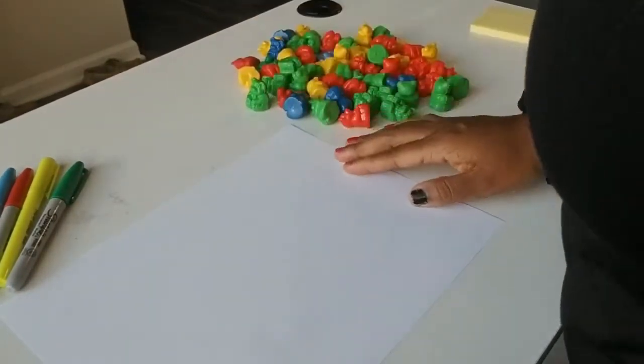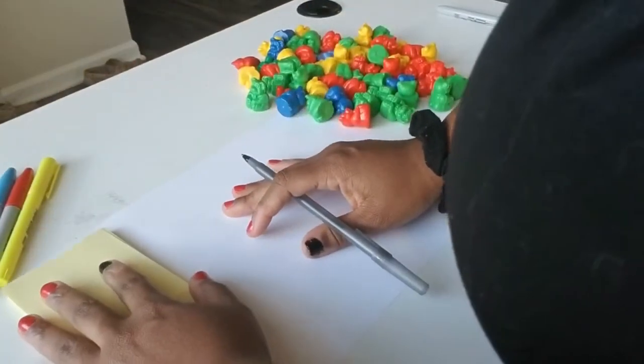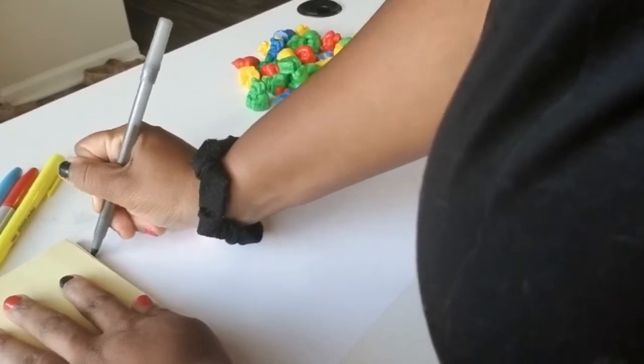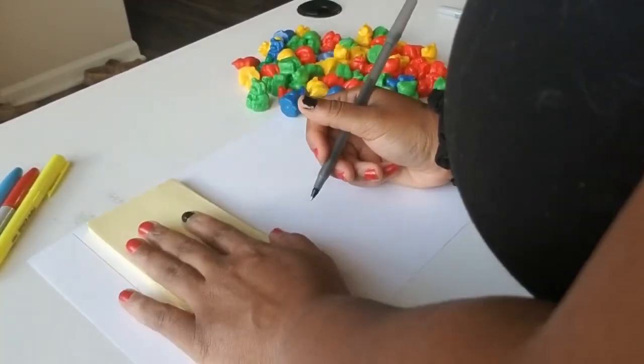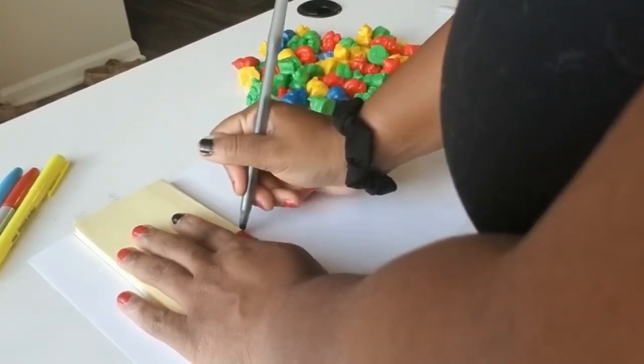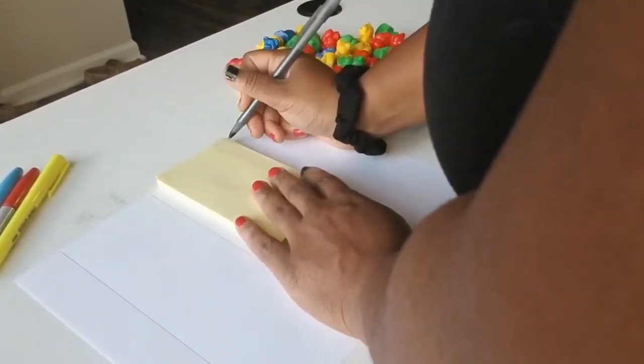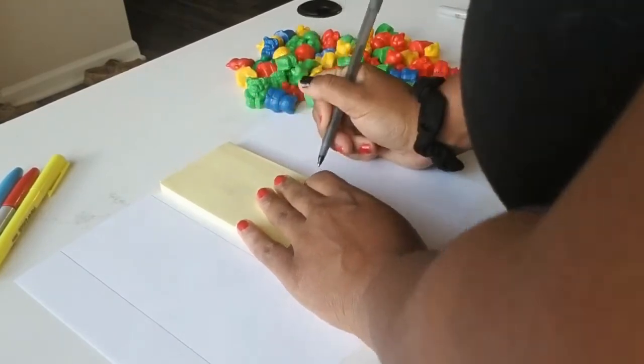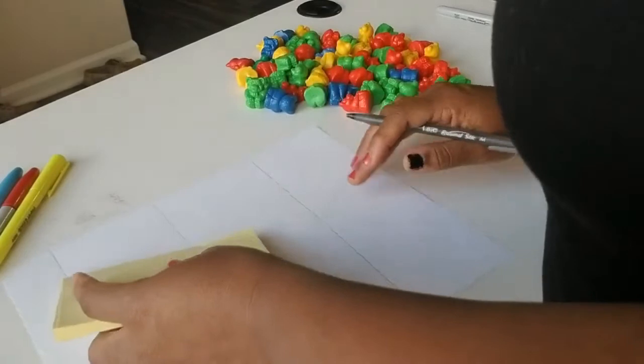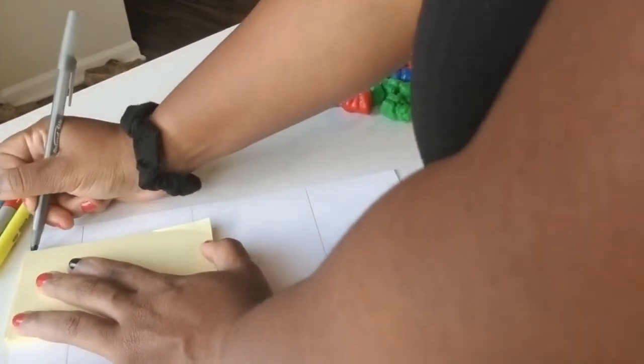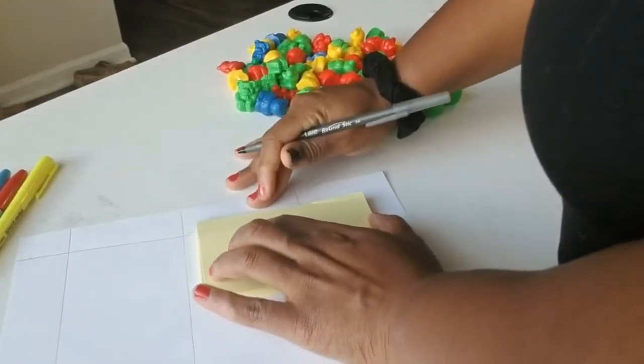All right, so the first thing you want to do is draw a chart on your piece of paper. It can be computer paper or regular notebook paper, but I prefer computer paper because it has no lines on it and it's easier for the child to see. You're going to draw four lines down and then a line across the top. Please excuse my drawing.